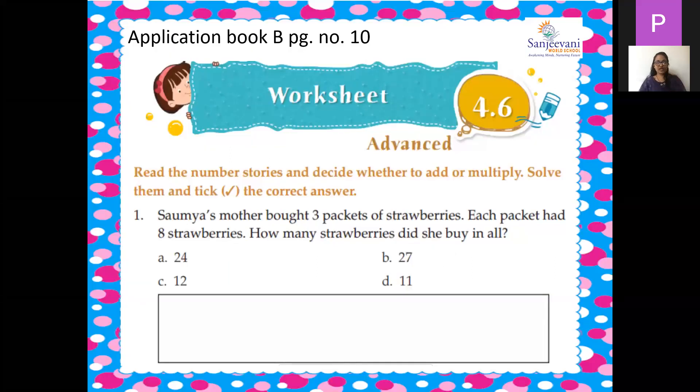Read the number story and decide whether to add or multiply. Solve them and tick the correct answer. So we don't know which operation we have to do, addition or multiplication. So we have to read the question and we have to decide, and then we have to solve it and tick the correct answer.